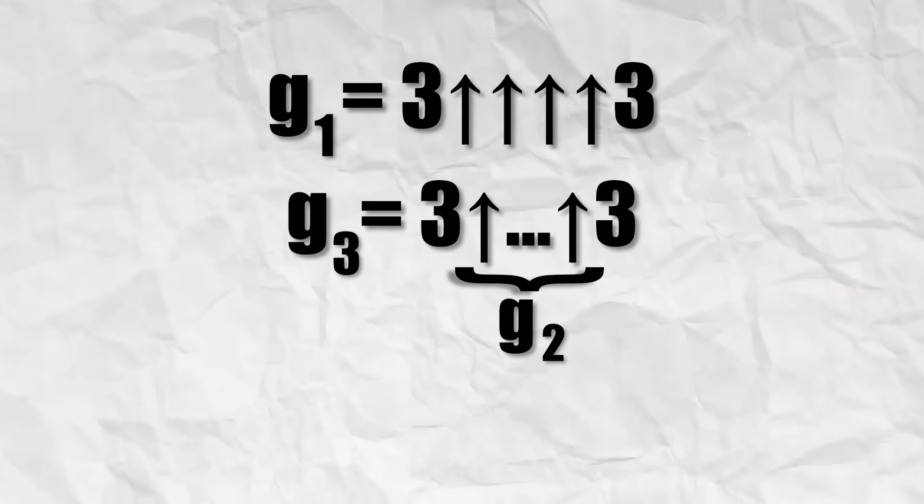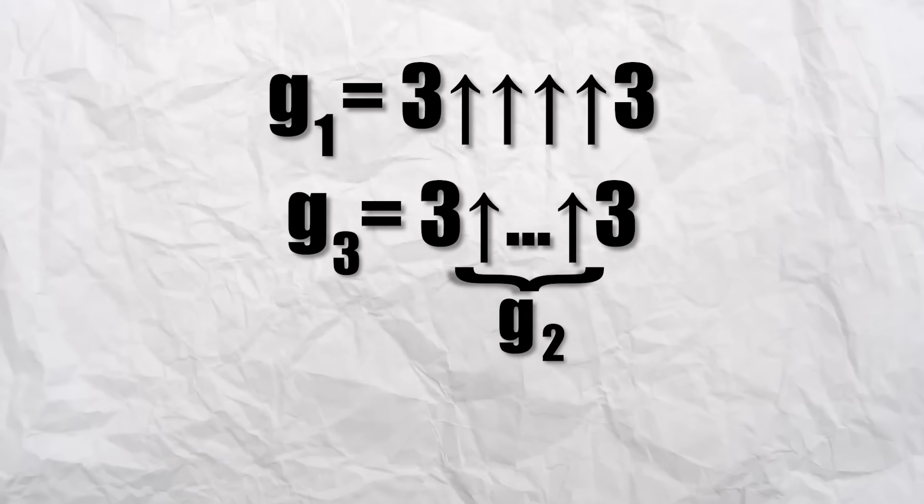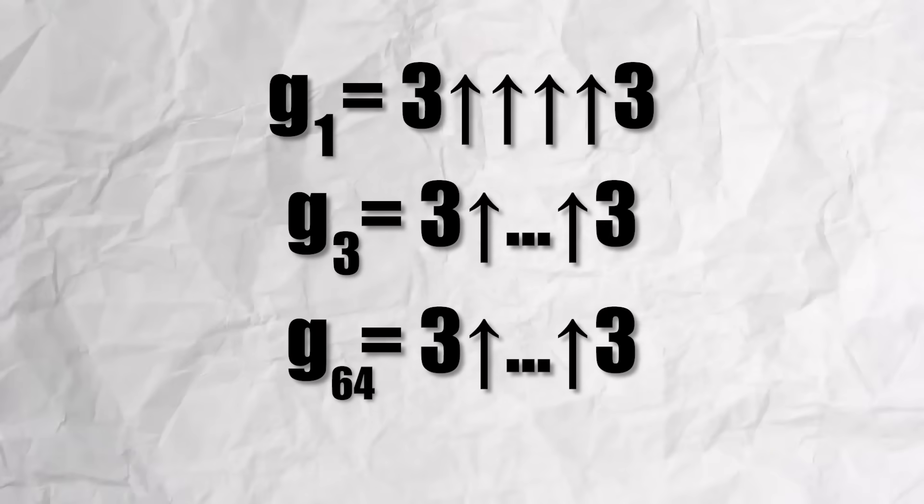Continuing to G3, we get G2 arrows, and so on. And when we get to G64, we've finally reached Graham's number.